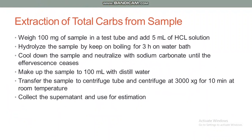Extraction of total carbohydrates from the sample: Initially, weigh 100 mg of sample in a test tube and add 5 ml of 2.5 normal hydrochloric acid solution. Hydrolyze the sample by keeping it on boiling for 3 hours on a water bath. Cool down the sample and neutralize with sodium carbonate until effervescence ceases. Make up the sample to 100 ml with distilled water. Transfer the sample to a centrifuge tube and centrifuge at 3000 times g for 10 minutes at room temperature. Collect the supernatant and use for estimation.